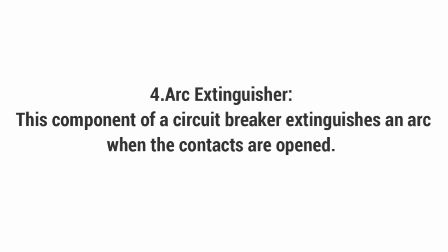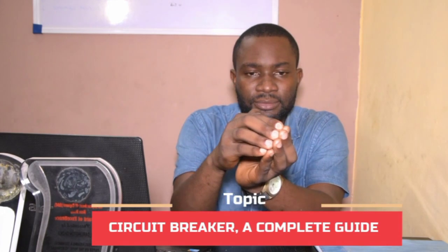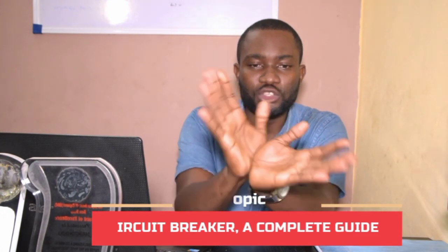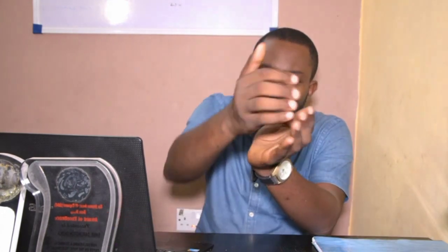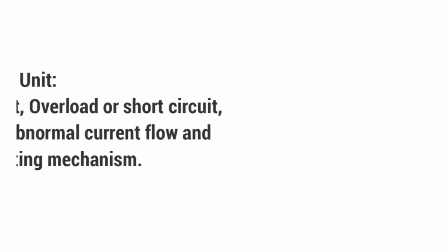The fourth part is the arc extinguisher. The arc extinguisher is the component that extinguishes an arc when the contacts are opened. When there is a fault and the breaker opens, the current has to go somewhere — before it can explode, the arc extinguisher envelopes the entire current at that moment to prevent an explosion. So when the breaker opens and the arc comes in, the arc extinguisher contains it.